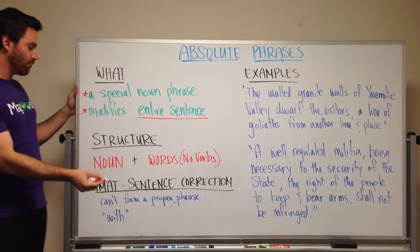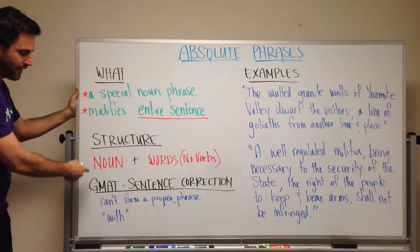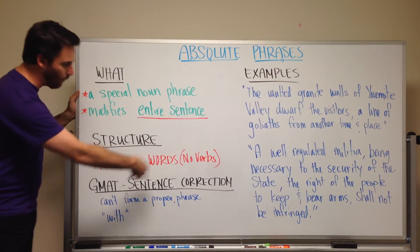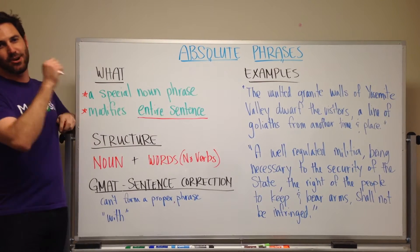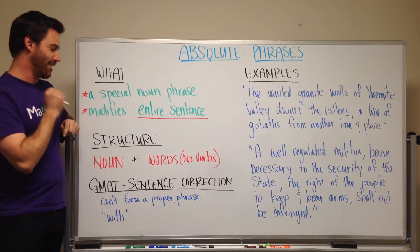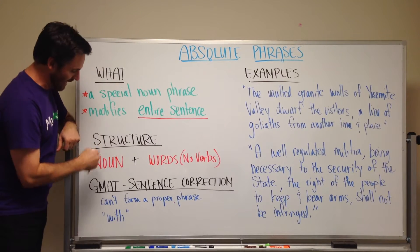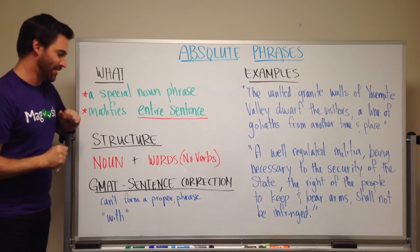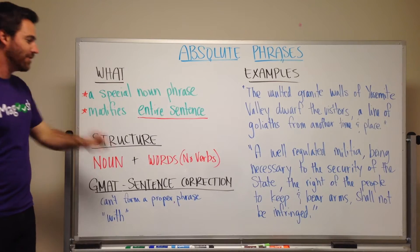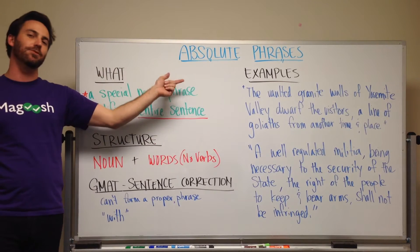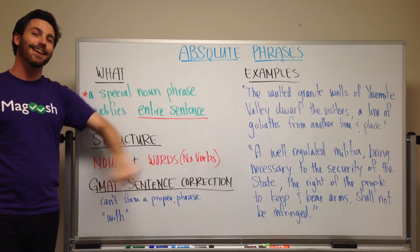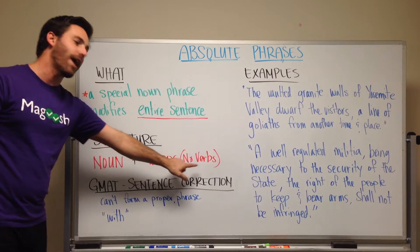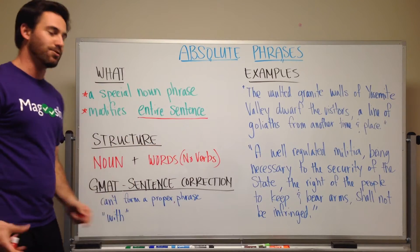The basic structure here is that you have a noun at the beginning, plus words that aren't verbs. Noun at the beginning, words that aren't verbs. And actually, you can take an absolute phrase and make it into a sentence or an independent clause if you add a verb to it.